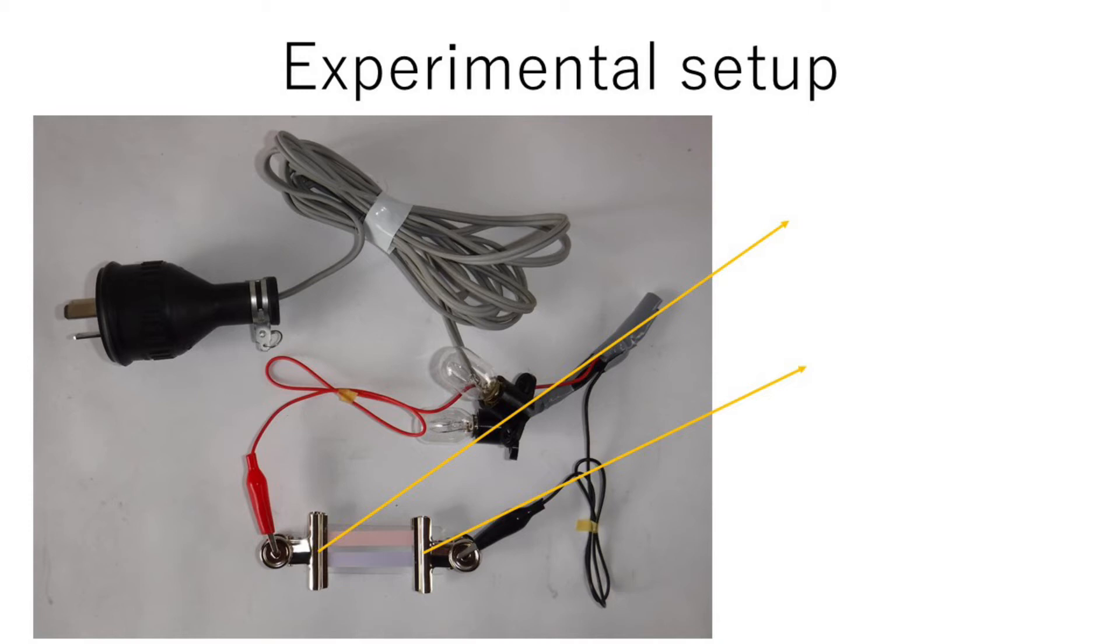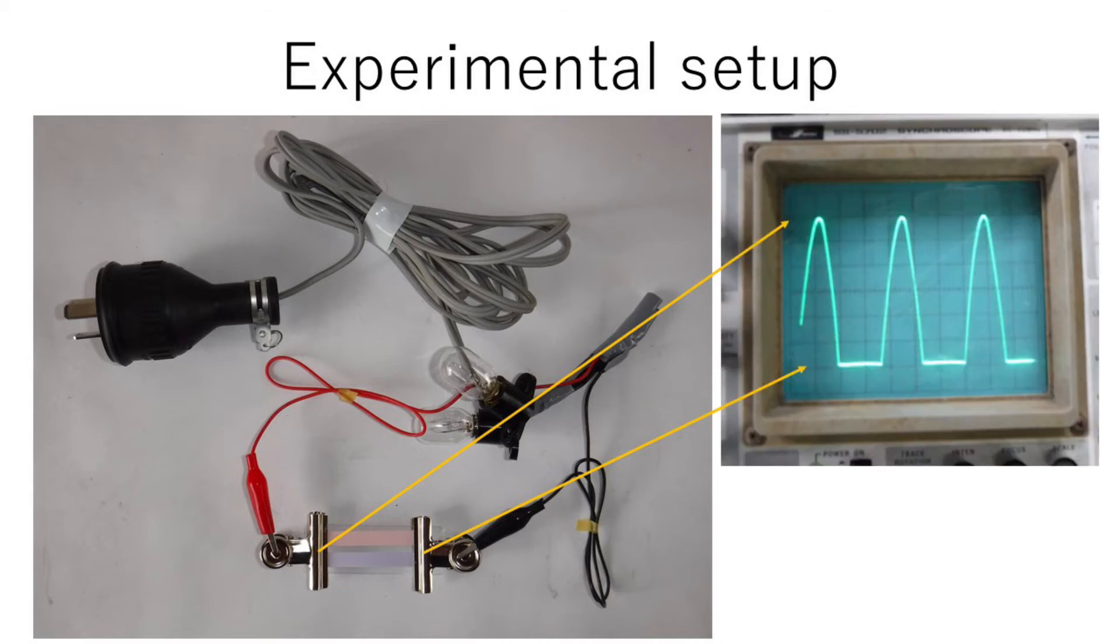The oscilloscope shows the electric output between two electrodes. The maximum output is 65V and 22mA.